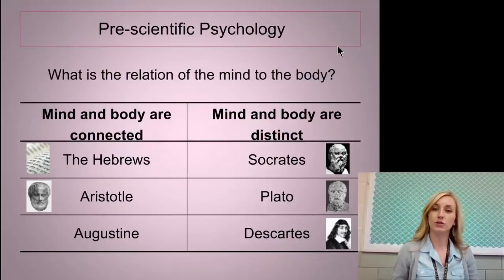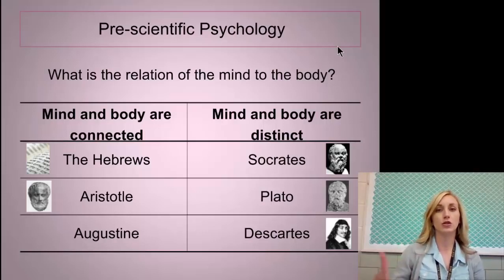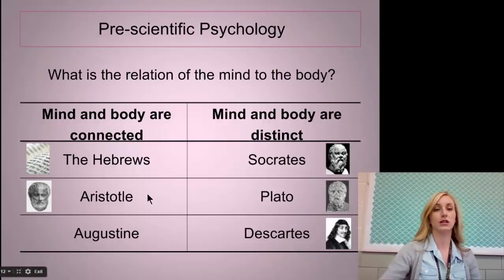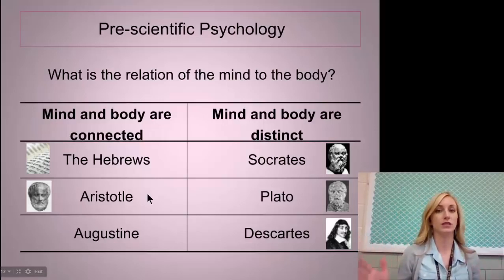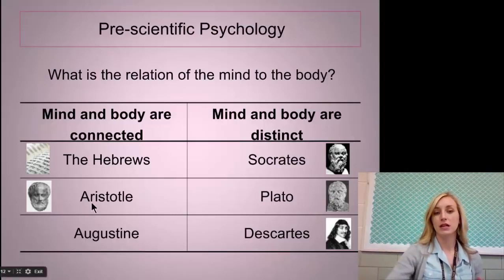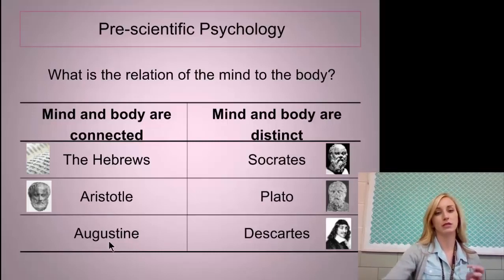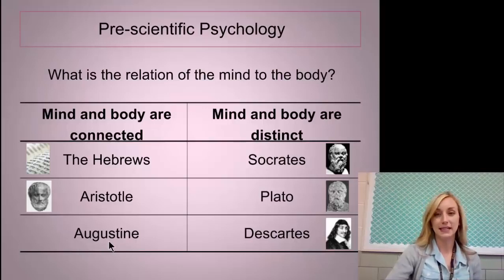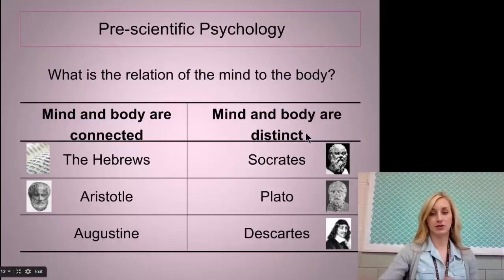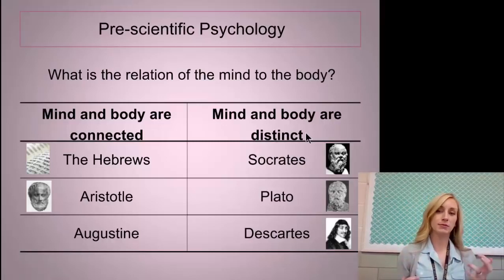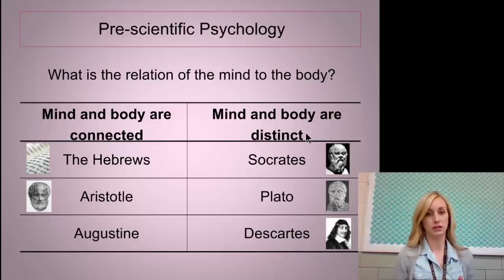Pre-scientific psychology is one of the learning objectives — you have to understand the philosophical contribution to psychology from the people listed on screen. They first started with philosophical thinking about what is the relationship between the mind and the body. The Hebrews, Aristotle — a big name asked by College Board — and Augustine all believed that the mind and body are somehow connected as one entity. Whereas Socrates, Plato, and Descartes believed the mind and body are two distinct, separate entities.